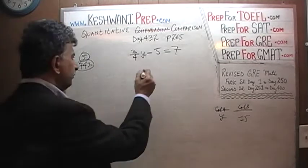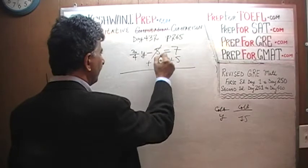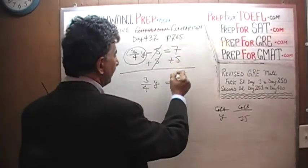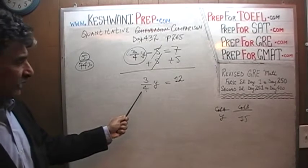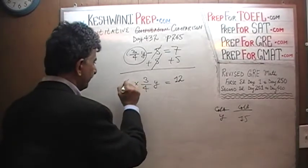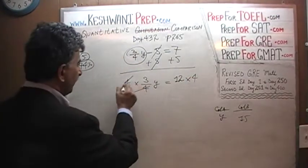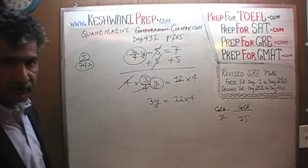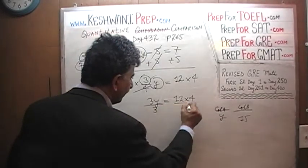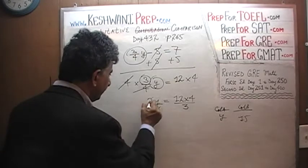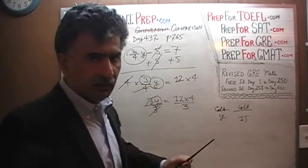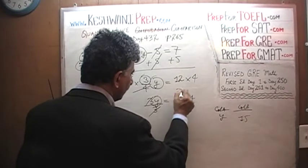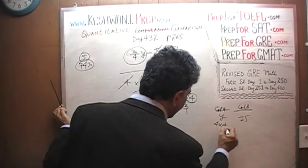Let's add 5 to both sides — the 5 drops out and we get three-quarter Y equals 12. Now multiply both sides by 4 — the 4 drops out and we get 3Y equals 48. Divide both sides by 3 — the 3 drops out and Y is by itself. 12 divided by 3 is 4, so Y equals 4 times 4, which is 16. Since 16 is greater than 15, the answer is A.